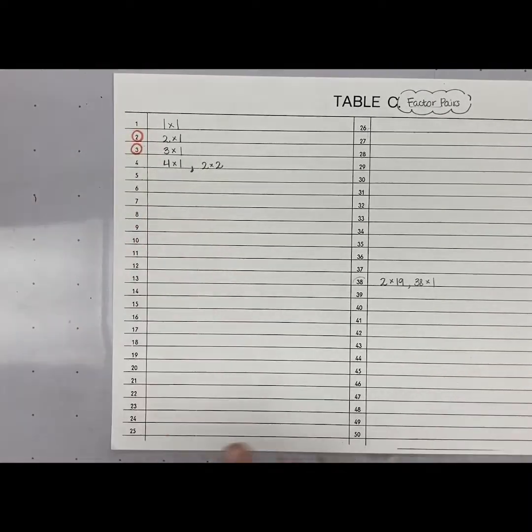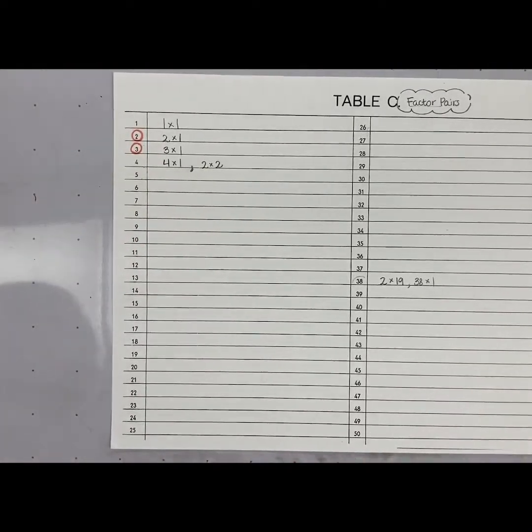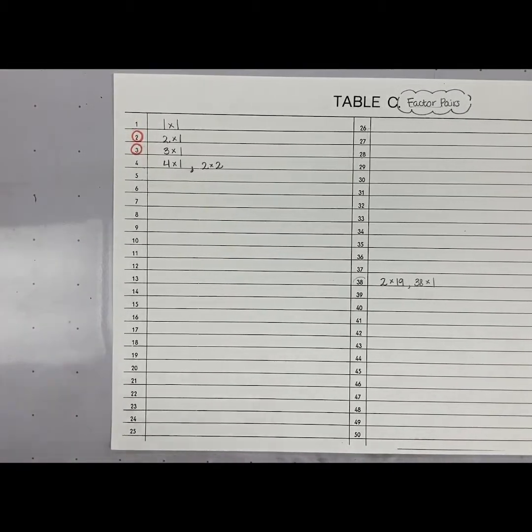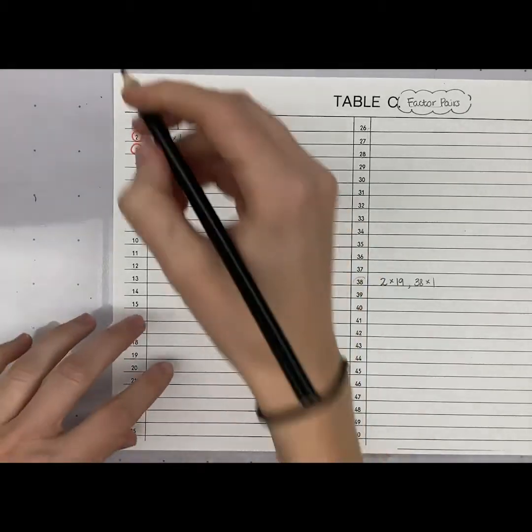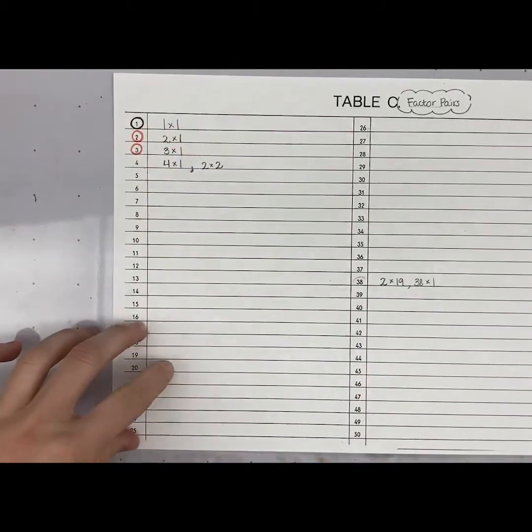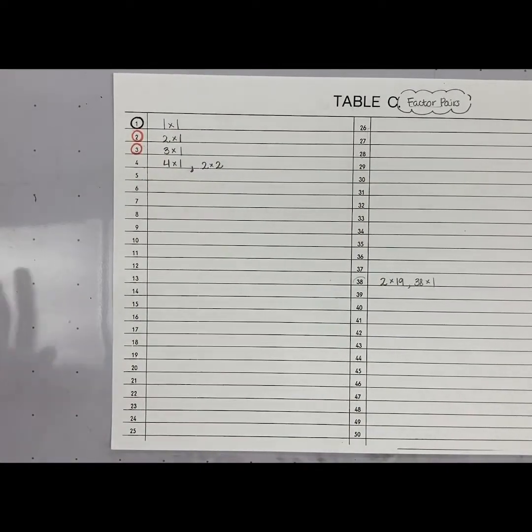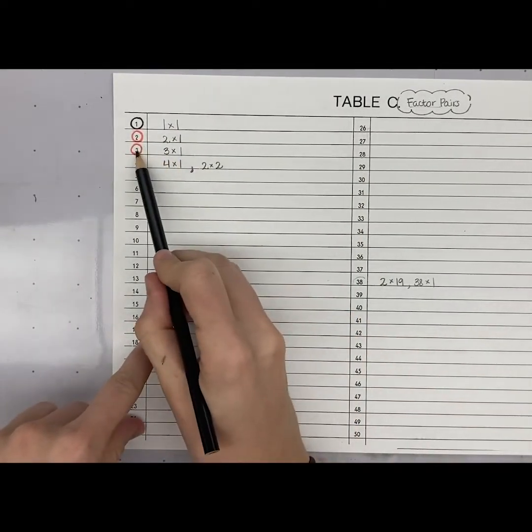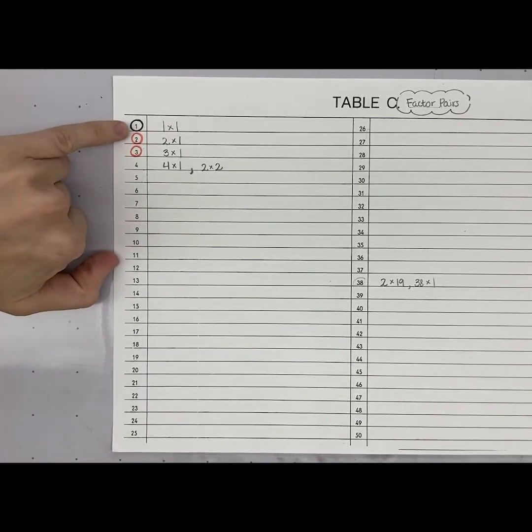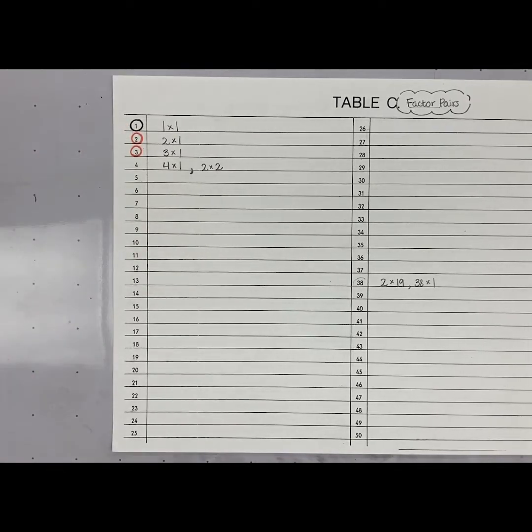I am going to circle one not in red. I'm actually going to circle it in black. And when we meet and go over table C, I will explain why I've done this. But one is kind of special. So, I'm going to circle it in black. Every other one that you find that only has the number itself times one, you're going to circle in red or any color you choose. But one needs to be in black. And we'll talk about that when we meet and go over our investigation a little bit later.